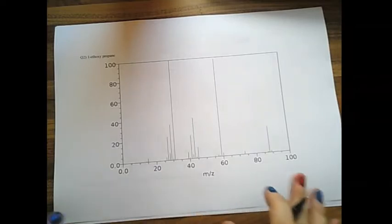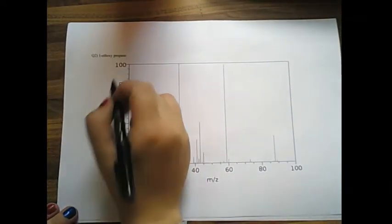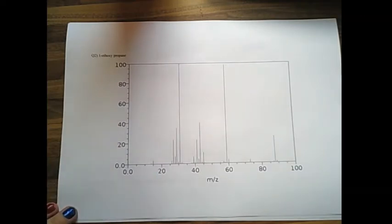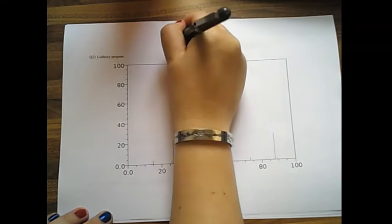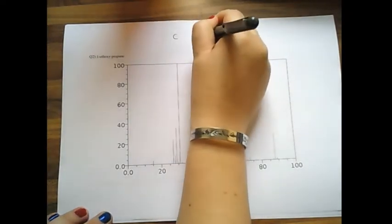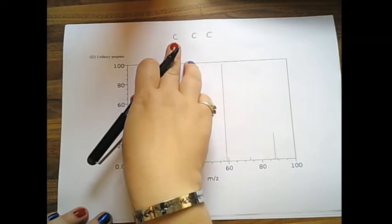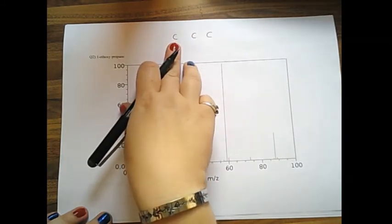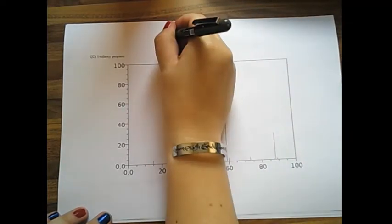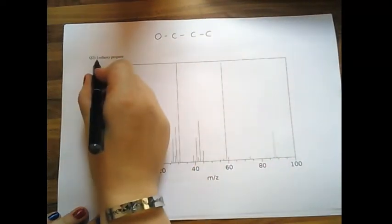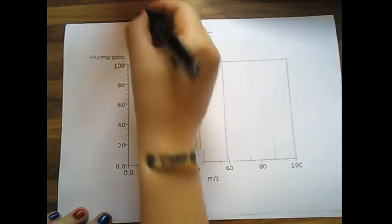Okie dokie. So what are we dealing with here? We are dealing with 1-ethoxy-propane. Fun, fun, fun. So we're going to have propane. So 1, 2, 3. If it's 1, it's going to be attached to that one there. So the oxy bit is going to go here. So we've dealt with the 1, we've dealt with the propane, we've dealt with the oxy. Now to deal with the eth bit.